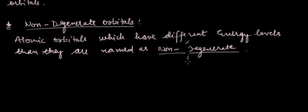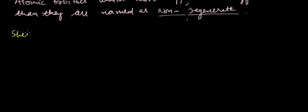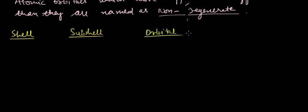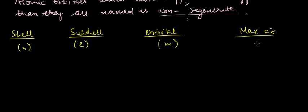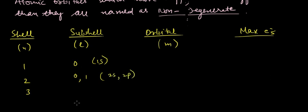We have first a shell, then a subshell, then an orbital, then maximum electrons. Shell is denoted by n, subshell by l, orbital by m. For shell n=1 the subshell is 0 (1s); for n=2 subshells are 0 and 1 (2s and 2p); for n=3 subshells are 0, 1, and 2 (3s, 3p, and 3d).